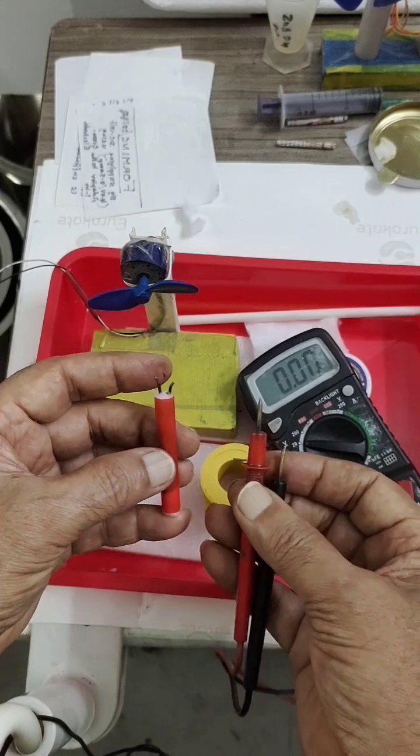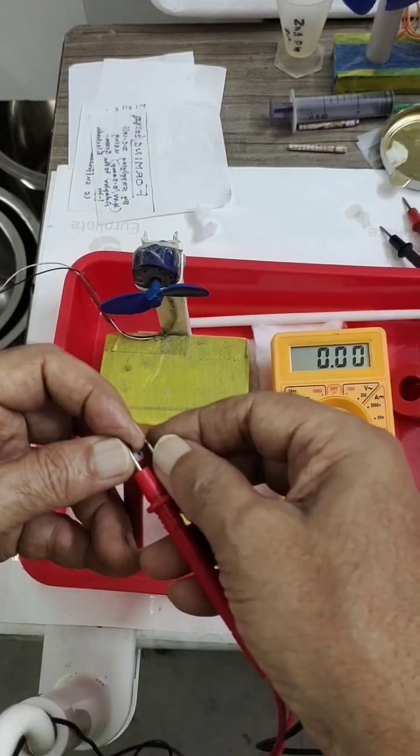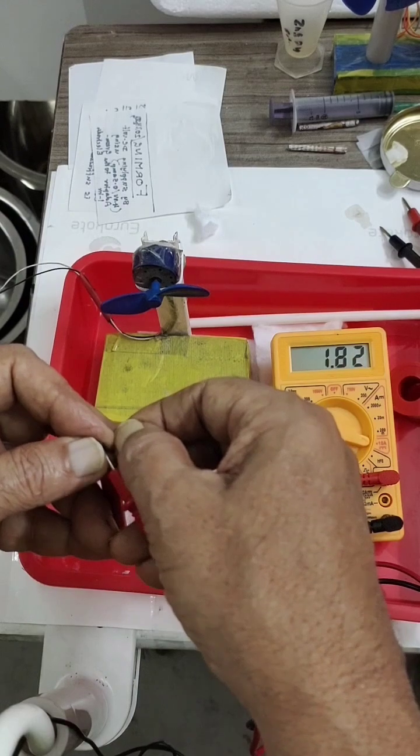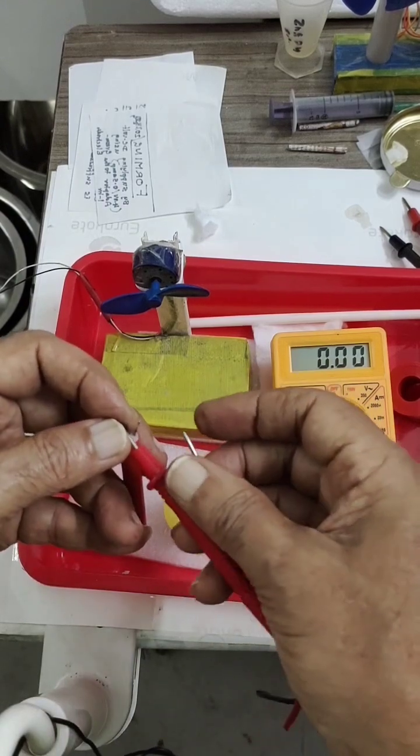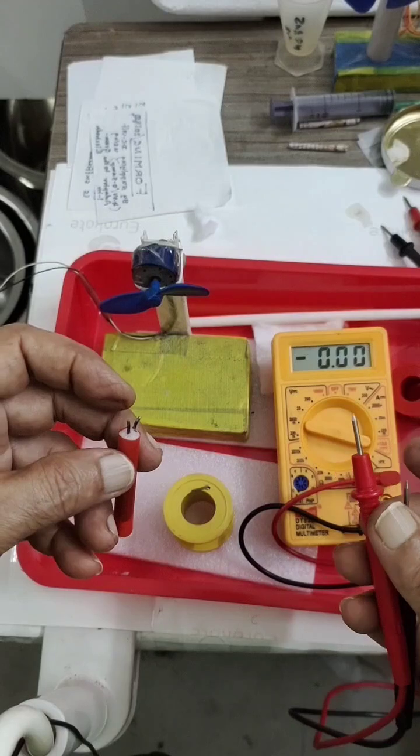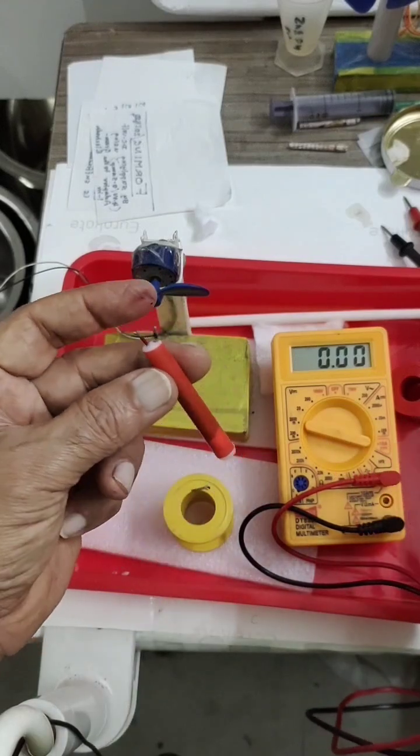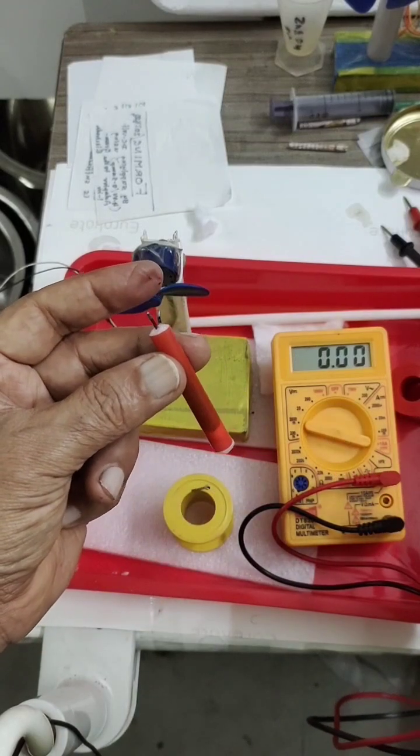I want to see what is the current it is able to generate. More than 1.9. It is even touching 2 amps. 2 amps, 2.1 volts. This small battery, really good.